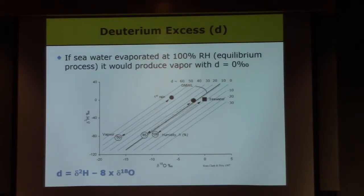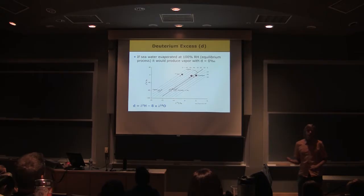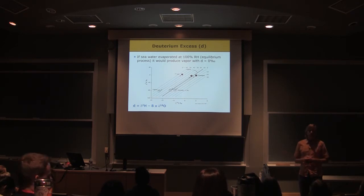So if seawater has evaporated at 100% relative humidity, what would you expect the deuterium excess of the vapor to be? It's kind of a silly trick question, right? But if you evaporate at 100% relative humidity, that becomes what kind of a process? Equilibrium again, right?